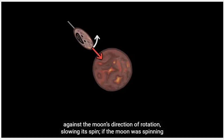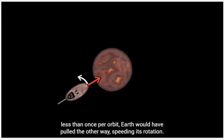If the Moon was spinning less than once per orbit, Earth would have pulled the other way, speeding its rotation.